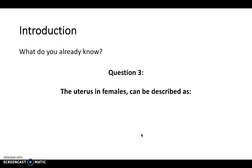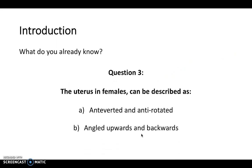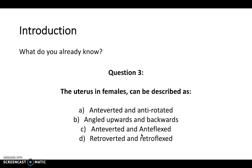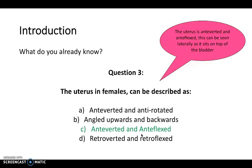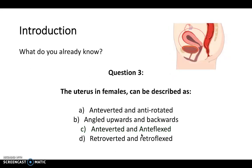And the final practice question: the uterus in females can be described as what — anteverted and antirotated, angled upwards and backwards, anteverted and anteflexed, or retroverted and retroflexed? The answer is anteverted and anteflexed, and it can be seen laterally in this picture as it sits on top of the bladder.